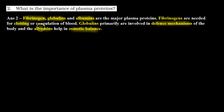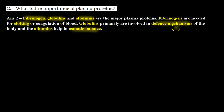So the answer to question number 2 is: fibrinogen, globulins, and albumins are the major plasma proteins. Fibrinogens are needed for clotting or coagulation of blood. Globulins are primarily involved in defense mechanisms of the body, and albumins help in maintaining osmotic balance.